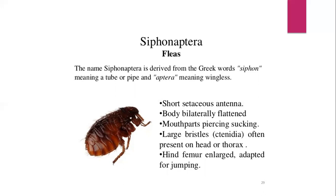Flea larvae are worm-like with no limbs and feed on organic debris left on the host's skin. Fleas spread different kinds of diseases and serve as vectors for various diseases.